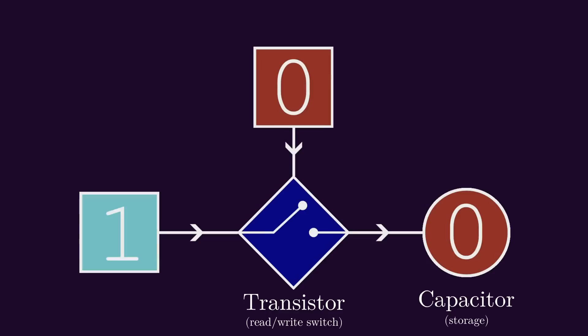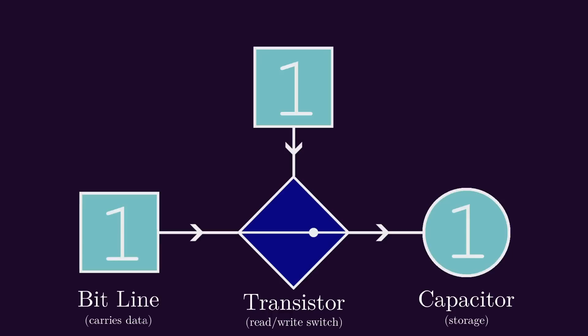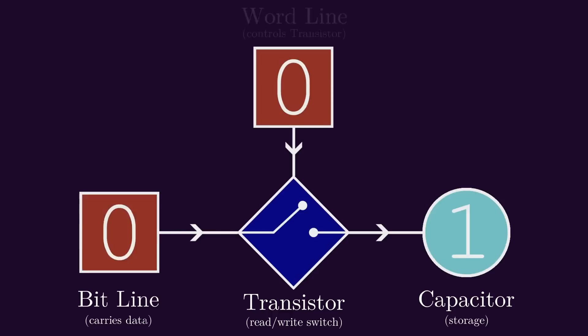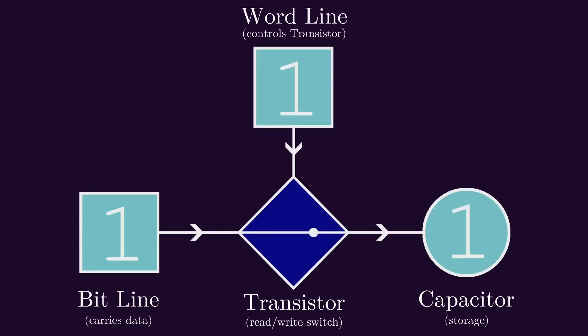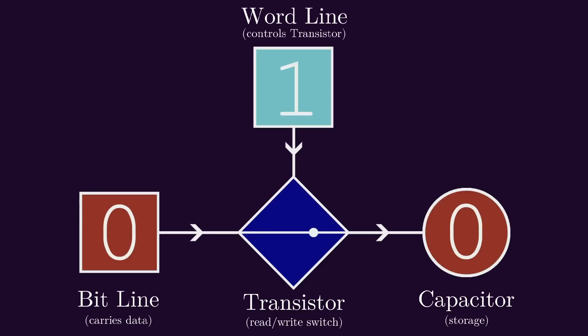And then finally, you have your two input channels: the so-called bit line, which carries the high or low voltage to write to memory, and the word line, which turns on and off the transistor.